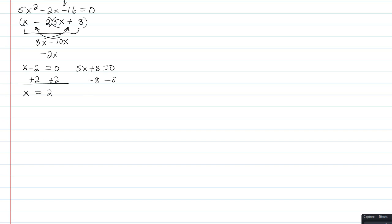For the other one, I'll subtract 8 from both sides. I get 5x = -8. Dividing by 5 gives x = -8/5. So my two answers are x = -8/5 and x = 2.